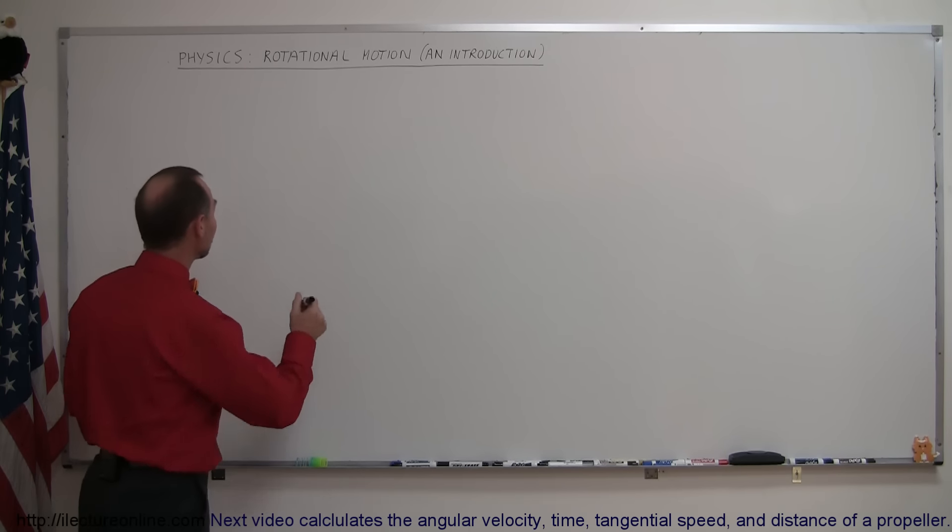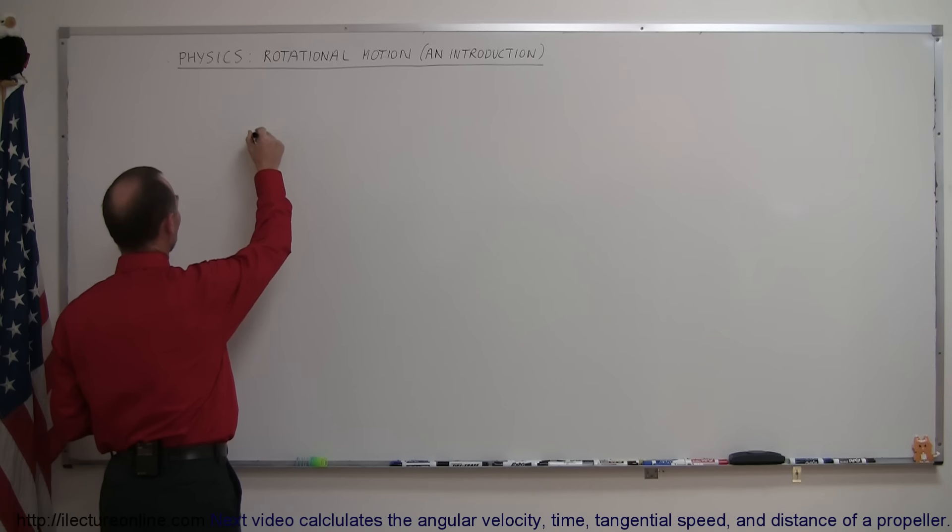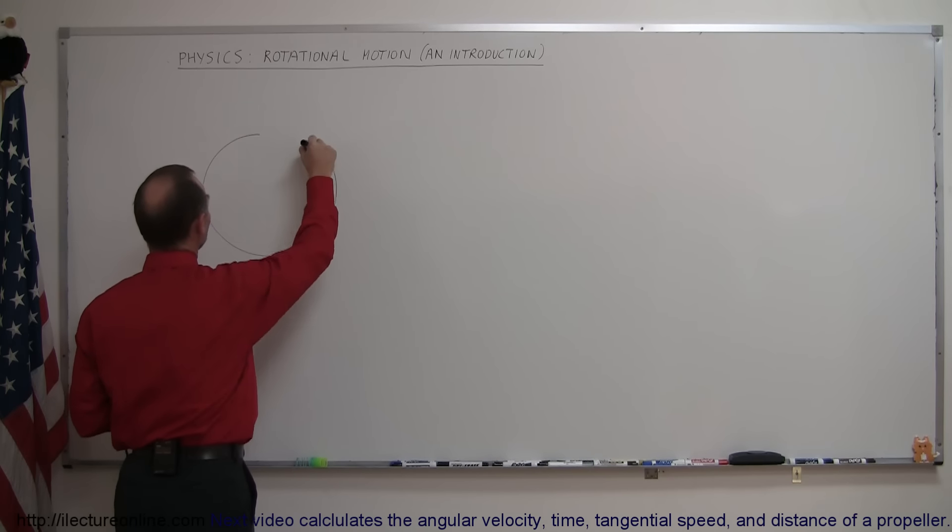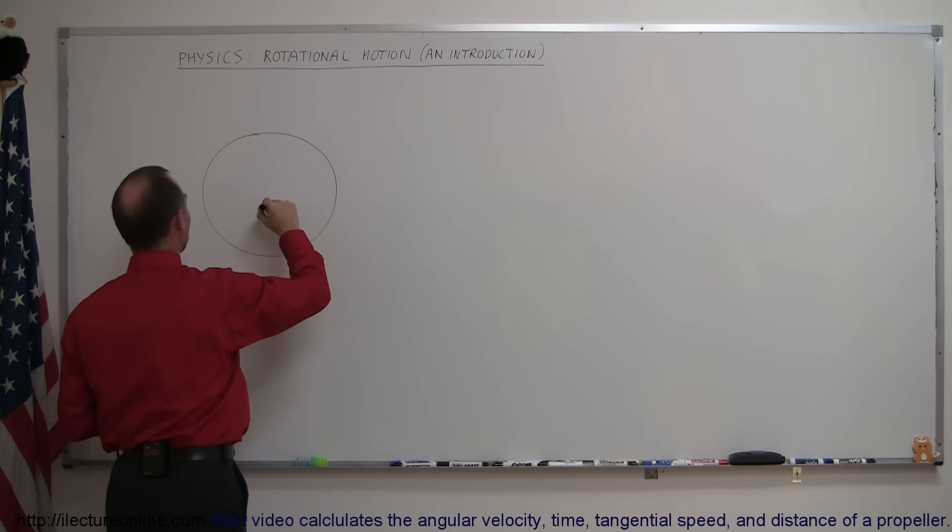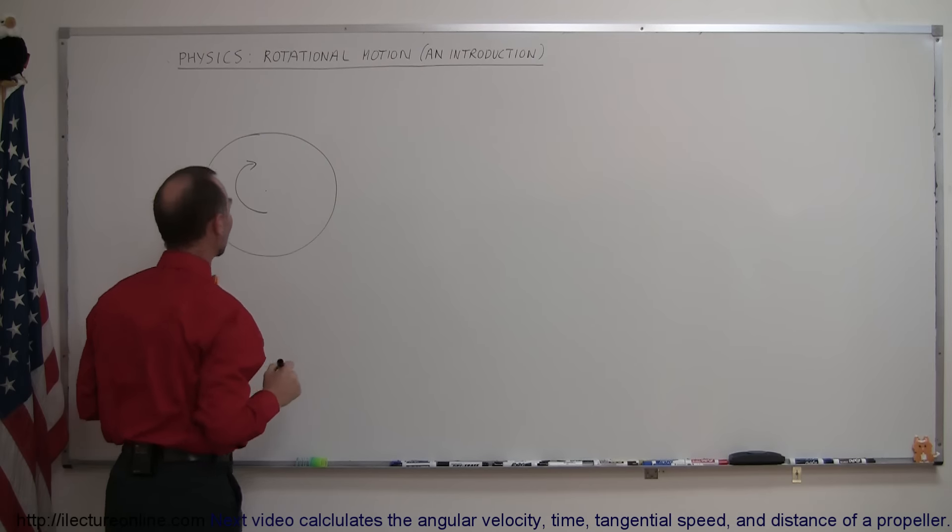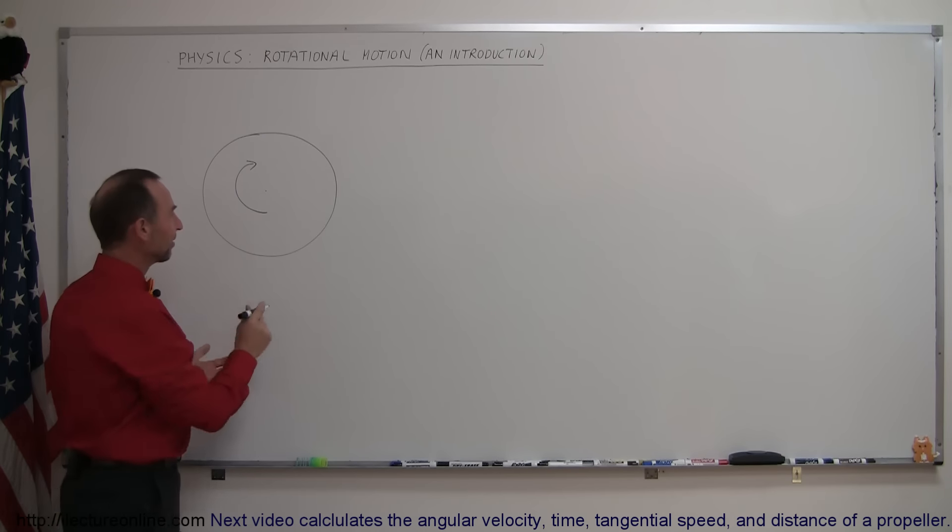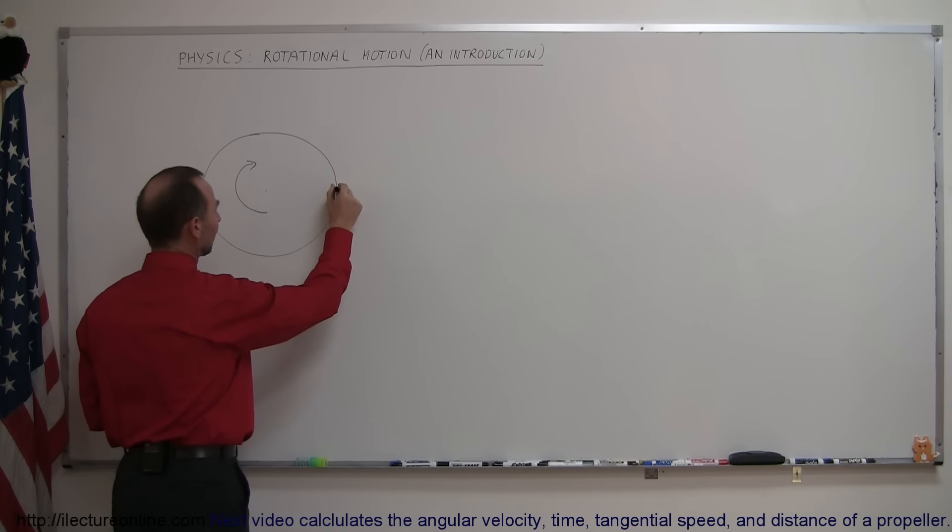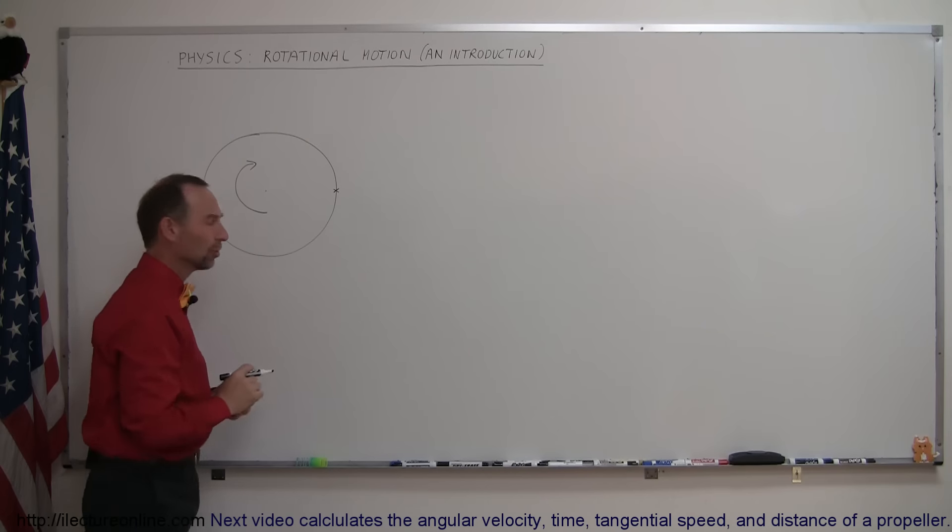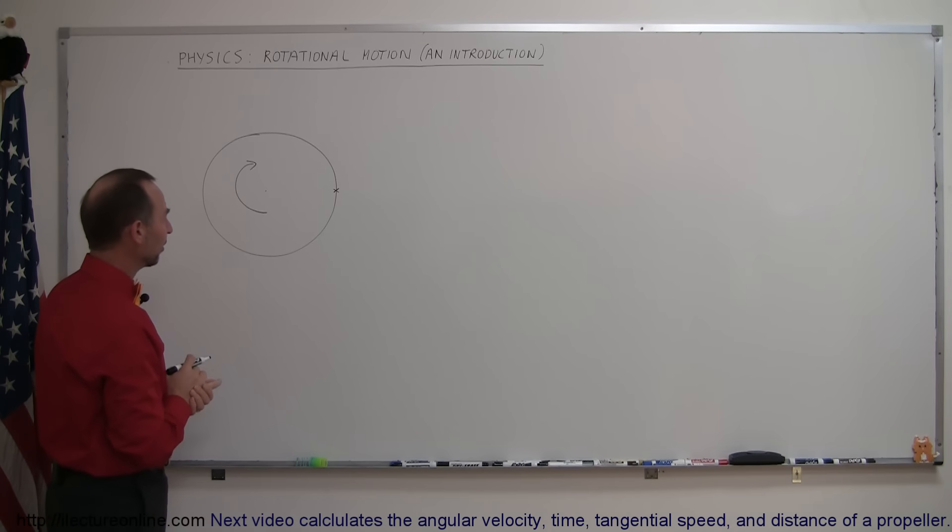So what is rotational motion? Well think of like a disc rotating around, so let's take a disc, let's say that it's rotating in a clockwise direction, and let's take a particular point on the disc, like a little corner, a little edge, or a particular dot on the edge of the disc.